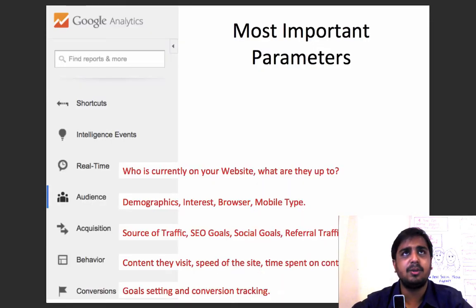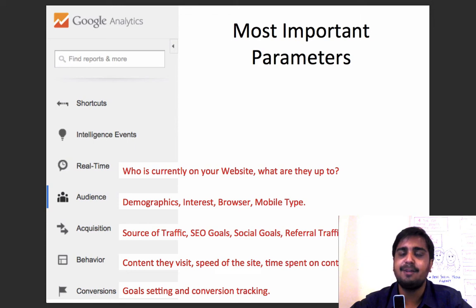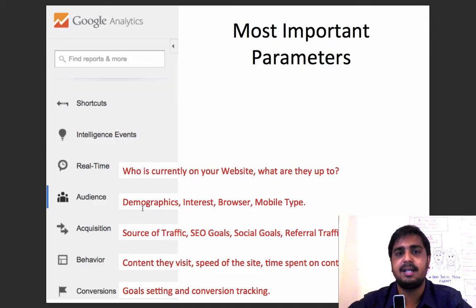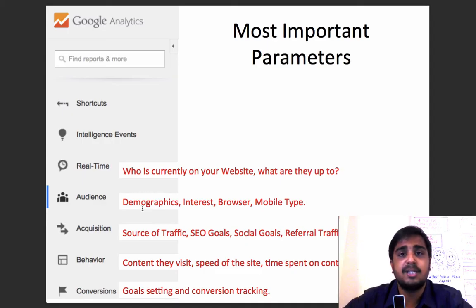Before I take you there practically, you should understand that in Google Analytics you can understand five different parameters. The first is a real-time scenario — it gives you data of who is currently on your website, on which page, and who is doing what. On a day-to-day basis, when there is more traffic coming to your website, you can understand what the current traffic is doing and even make a pop-up based on the behavior of the person on a specific page.